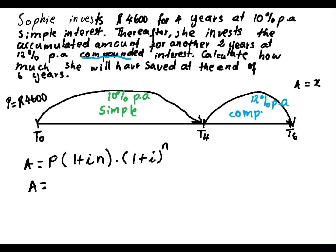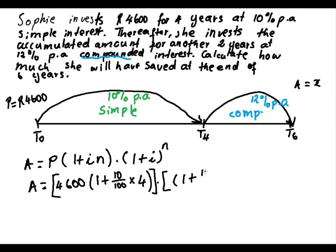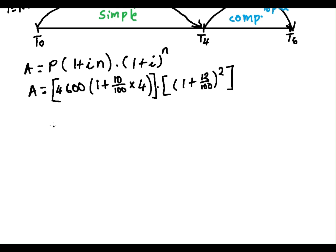We are going to substitute. Our present amount at T0 is 4,600 rands, multiplied by 1 plus 10 divided by 100, times 4 years. Then we introduce square brackets and take this present amount and multiply it with the last 2 years of the savings plan, which is compounded: 1 plus 12 divided by 100, to the power of 2. Punching this on your calculator, you should get R8,078.34.